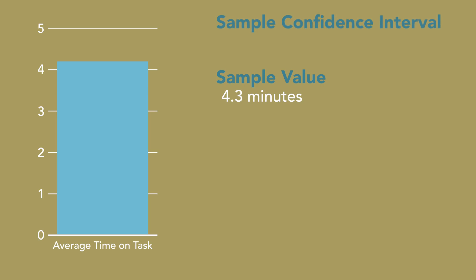Imagine that we have a goal to make sure that this task is so easy, it takes people on average less than 5 minutes to complete it. If my confidence interval is 3.6 to 4.9 minutes, that means I can be very confident that the true population value — the actual amount of time it takes all of my customers to complete the task — is less than 5 minutes. So it looks like we're achieving that goal.